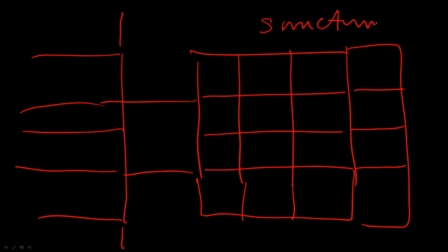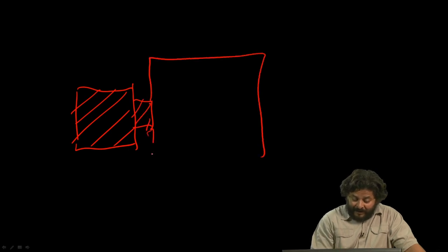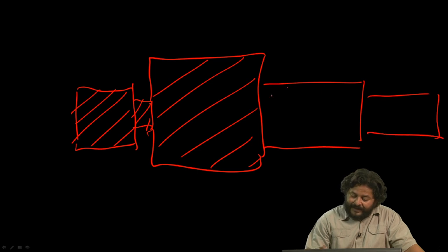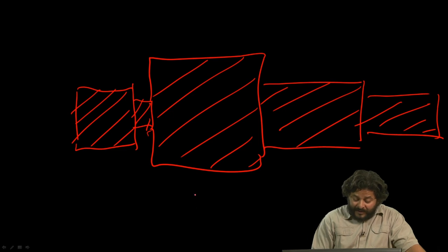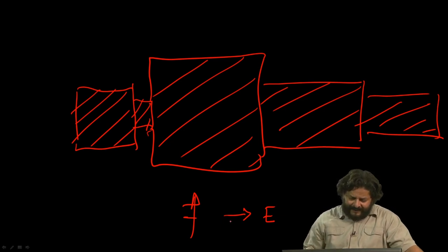This is the sanctum called the Garbha griha. This is the mandapa or the assembly hall which is in front. This transitional zone, which is also very important in temples, is called the antarala. A typical temple plan by the 10th or 11th century will be a Garbha griha or sanctum, a small antarala, a big sabha mandapa, and sometimes a whole series of mandapas in front each meant for a specific different purpose. Most temples will face east, but in exceptional circumstances depending on the deity and other factors, temples might face north, west, or south — south being quite rare.